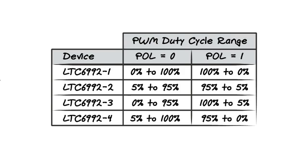The LTC6992-3 has a high side clamp only and covers the 0 to 95% duty cycle range. And lastly, the LTC6992-4 has only the low side clamp and covers the 5% to 100% duty cycle range.